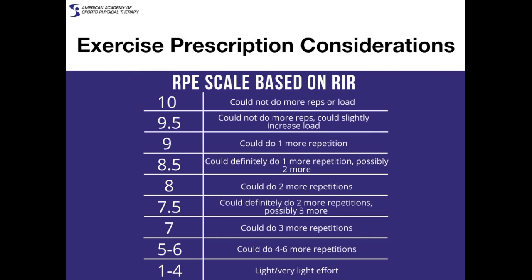I find an RPE-to-reps-in-reserve conversion chart helpful to give to patients when using auto-regulation. If I tell a patient to work up to a 7 out of 10 on the RPE scale, they know that means they could probably do about three more repetitions. If I tell them to stop when they feel they can only do one more repetition, they can see that equates to around a 9 out of 10 on the RPE scale. I find this chart useful for my own purposes and to give to patients for their home exercise program and in-clinic use.